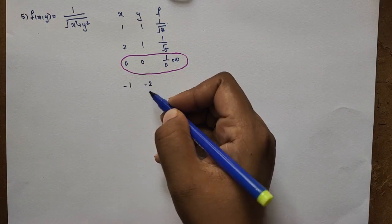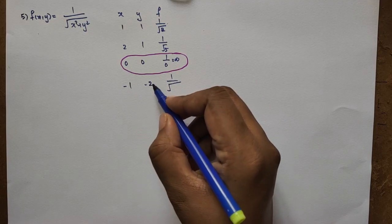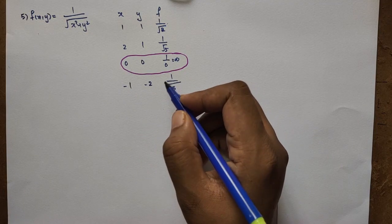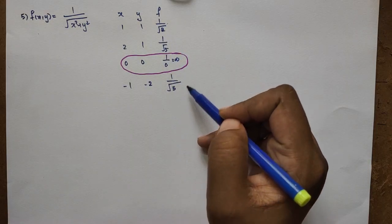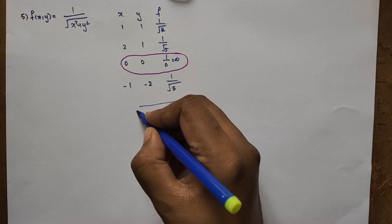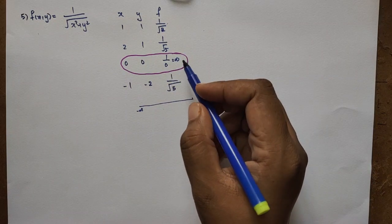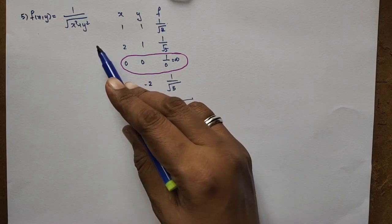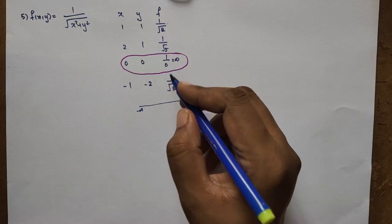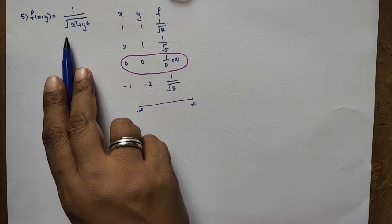For example, f(-1,-2) = 1 divided by the square root of 1+4 = 1/√5. The square root of a positive value is always positive. For any real x and y except the origin, the output f is a positive number — not negative.